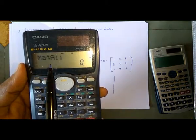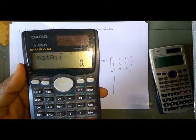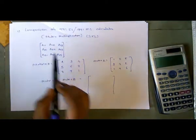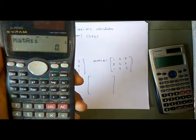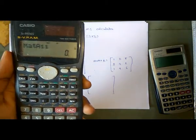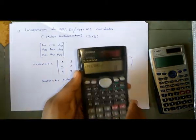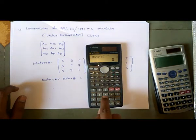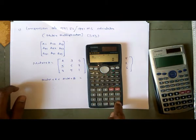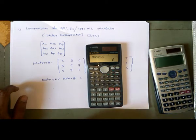The calculator will now ask for each value. A11 is 2, A12 is 3, A13 is 4. Likewise, press 2 equals, 3 equals, 4 equals, 5 equals, 6 equals, 7 equals, 8 equals, 9 equals, 1. All data for matrix A has now been inserted.